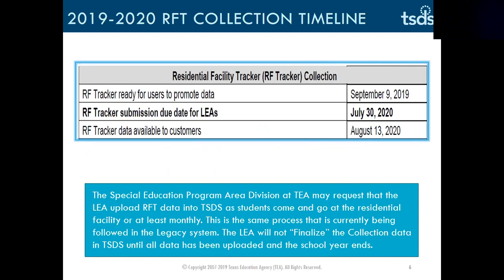The Residential Facility Tracker Collection dates are as follows. RF Tracker will be ready for users to promote data September 9, 2019. RF Tracker submission due date for LEAs will be July 30, 2020, and RF Tracker data available to customers will be August 13, 2020. The Special Education Program Area Division at TEA may request that the LEA upload RFT data into TSDS as students come and go at the residential facility, or at least monthly. This is the same process currently followed in the legacy system. The LEA will not finalize the collection data in TSDS until all data has been uploaded and the school year ends.